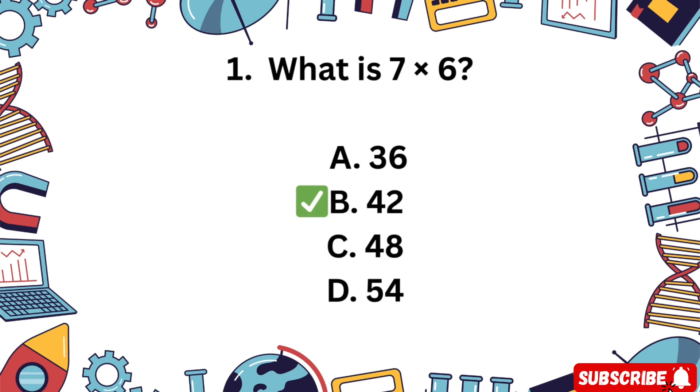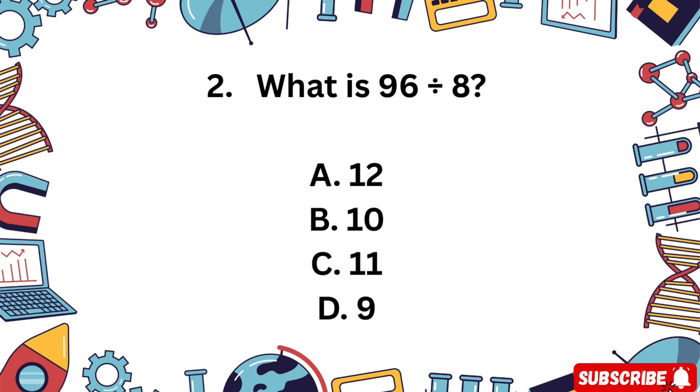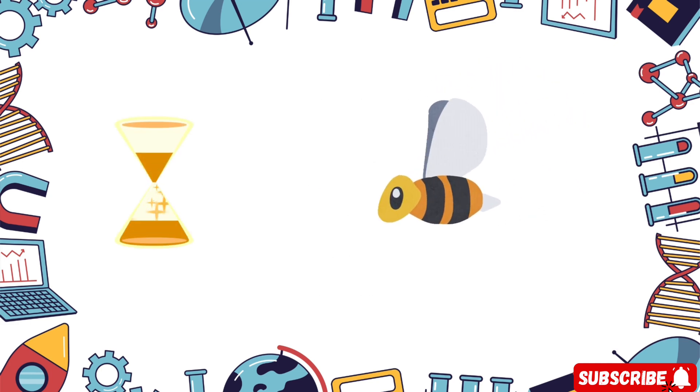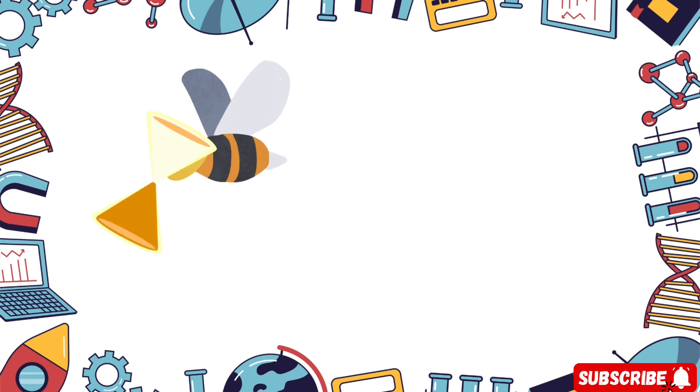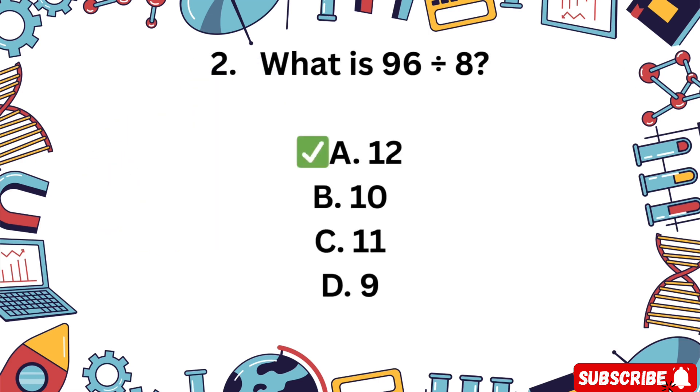Question 2. What is 96 divided by 8? A 12, B 10, C 11, D 9. You have 5 seconds. The correct answer is A 12. 96 divided by 8 equals 12.